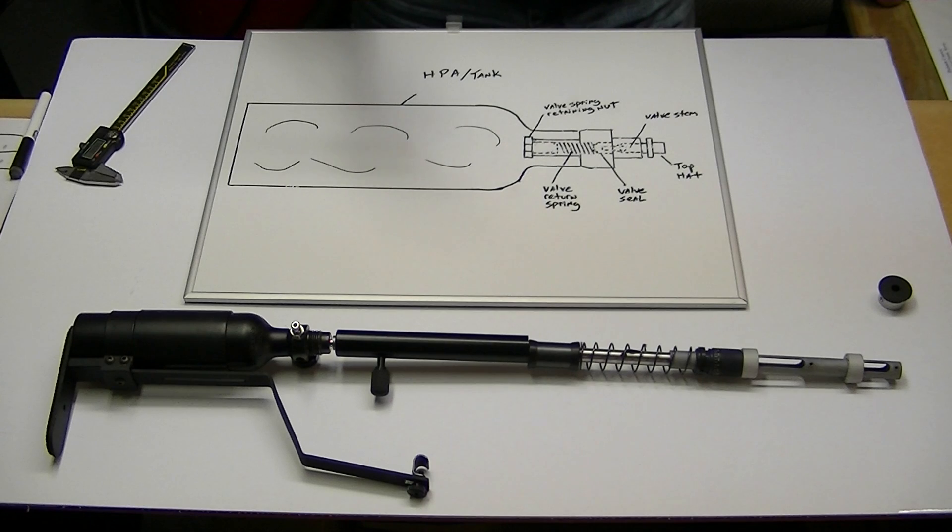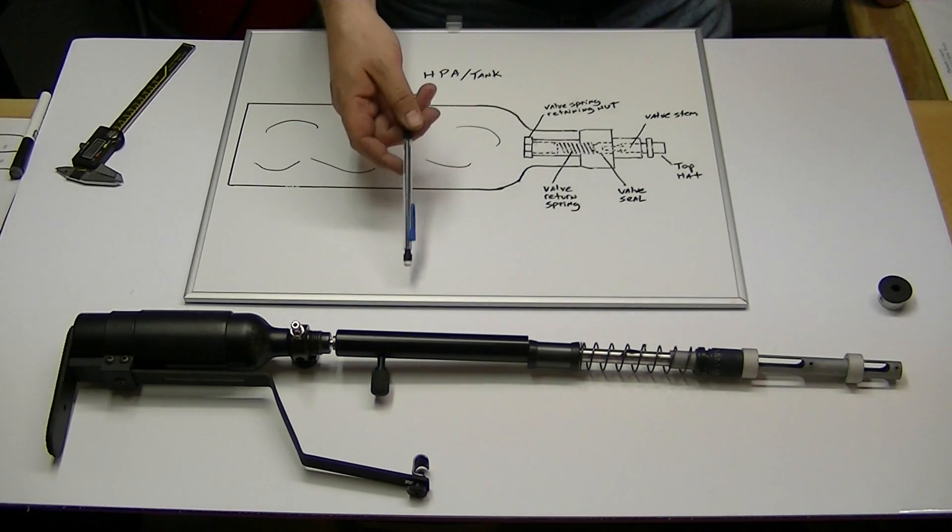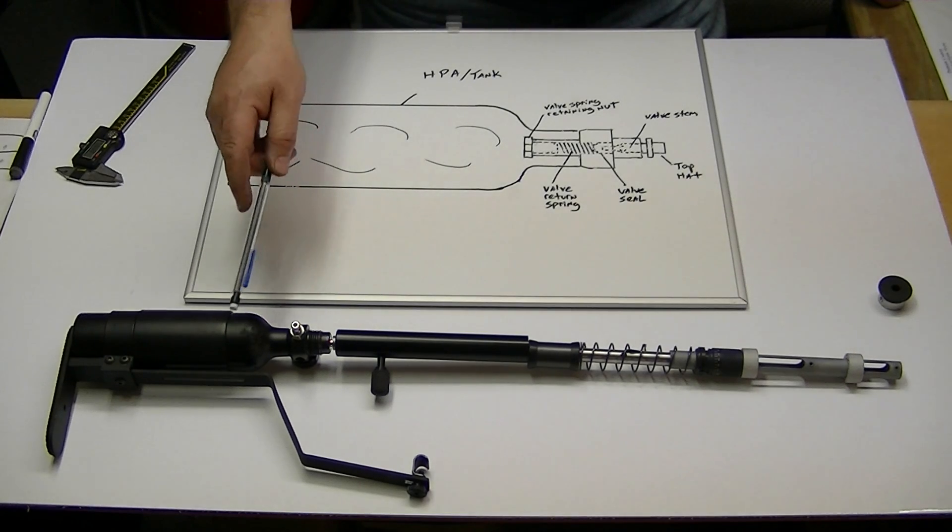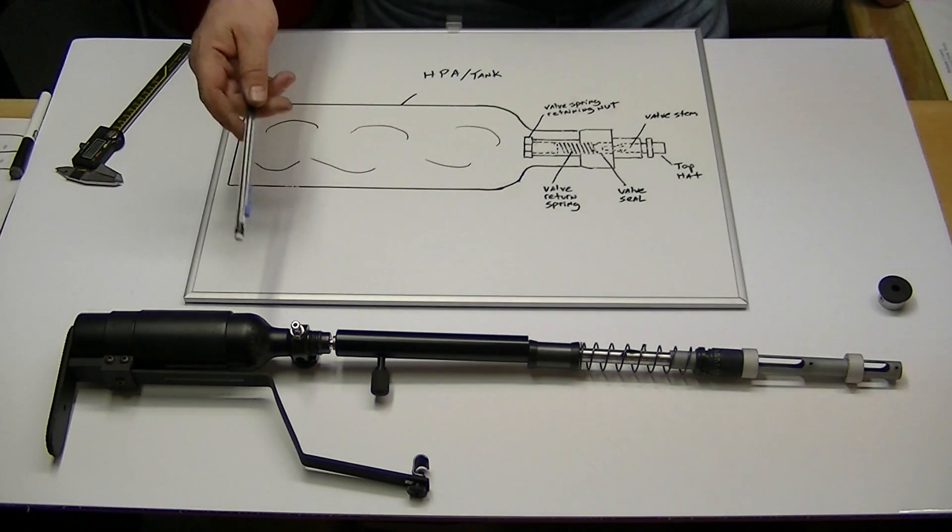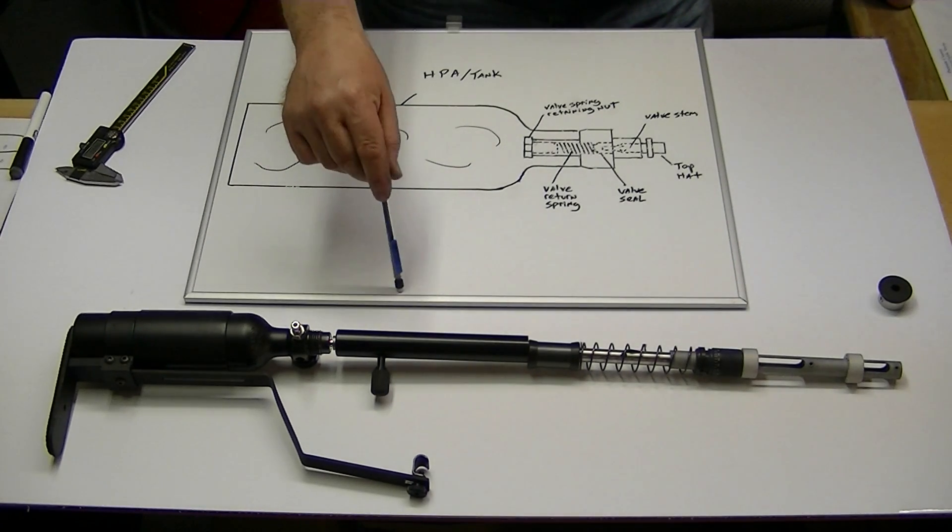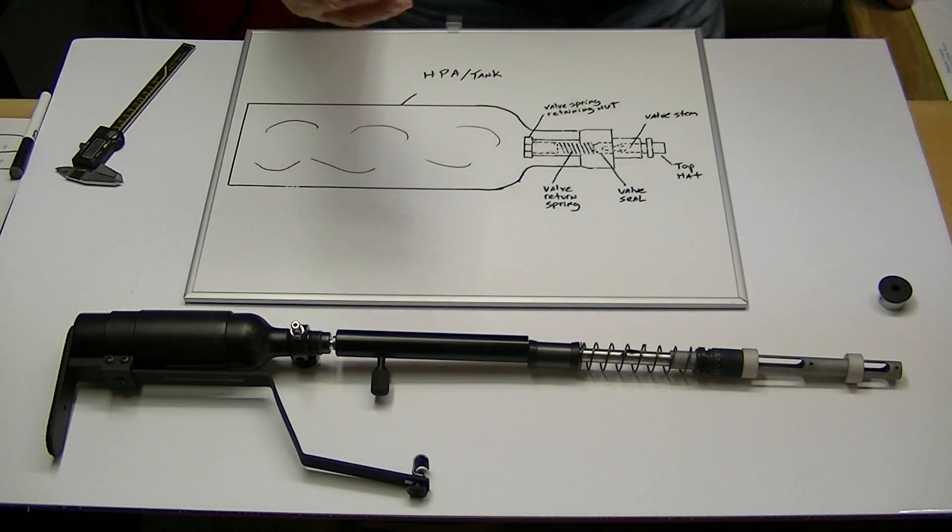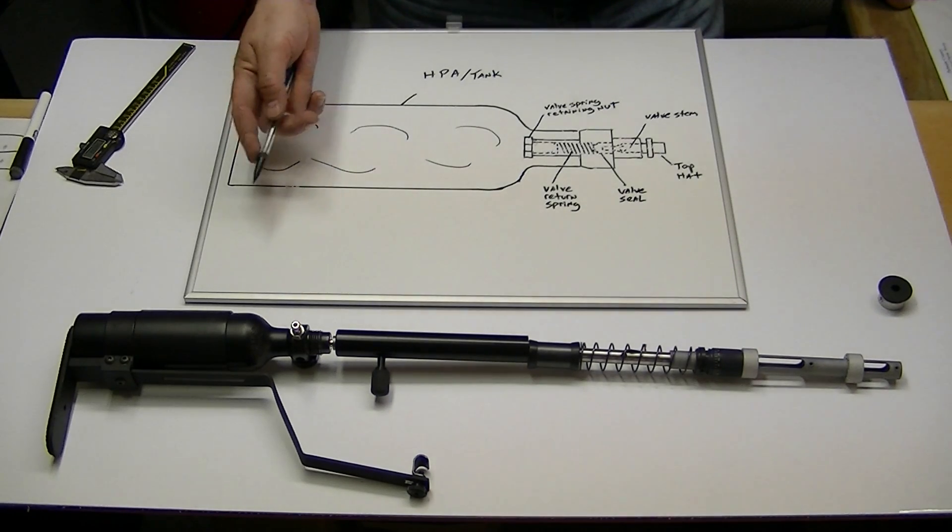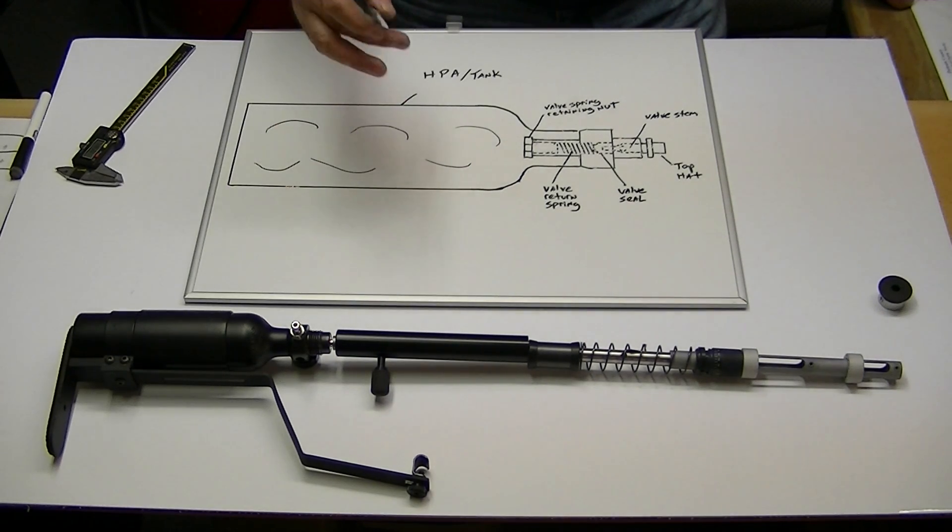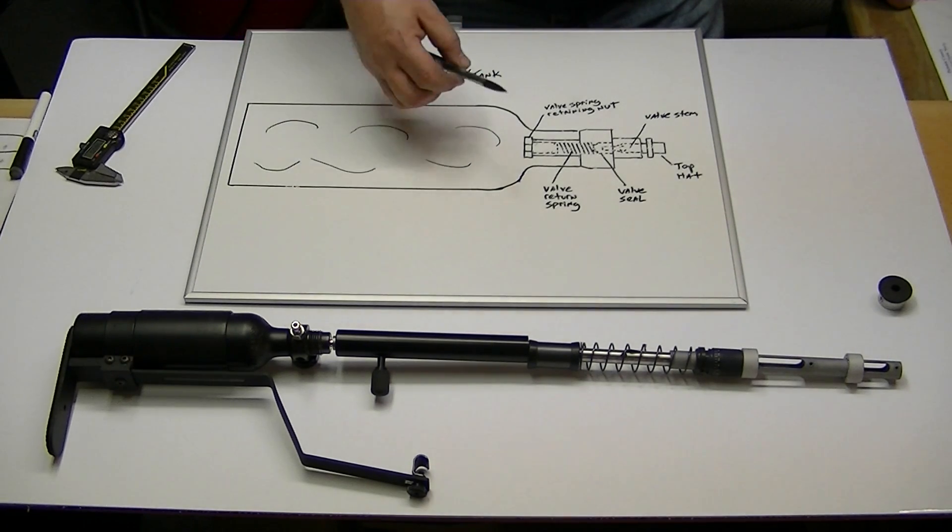Usually what's going to happen is, whenever you start to do your first shot string, the first one or two or possibly even three shots from a 3,000 PSI fill are going to be unusable. What you want to do, whenever you start writing down your first shot string, which assumes that you have a chronograph, which if you don't have a chronograph, you need to get one of those.